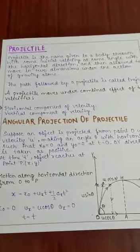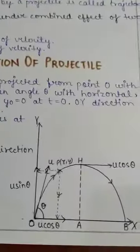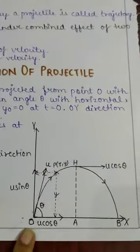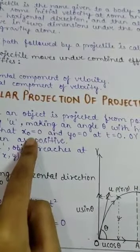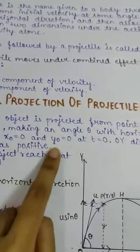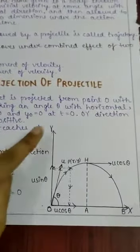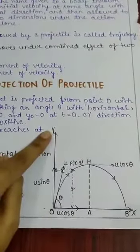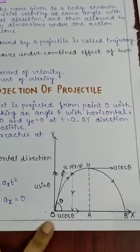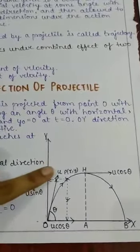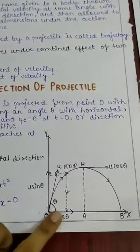Now, angular projection of our projectile. Suppose, koi body hai, jo origin pe hai. Jab time zero tha, toh uska x coordinate ho gaya, x naught equals to zero, and uska y coordinate ho gaya, y naught equals to zero. Y direction mein measurement, hamesha positive liya hai. Ab jab hum ne us body ko project kiya, u initial velocity ke saath, jo ground ke saath theta angle bana raha.